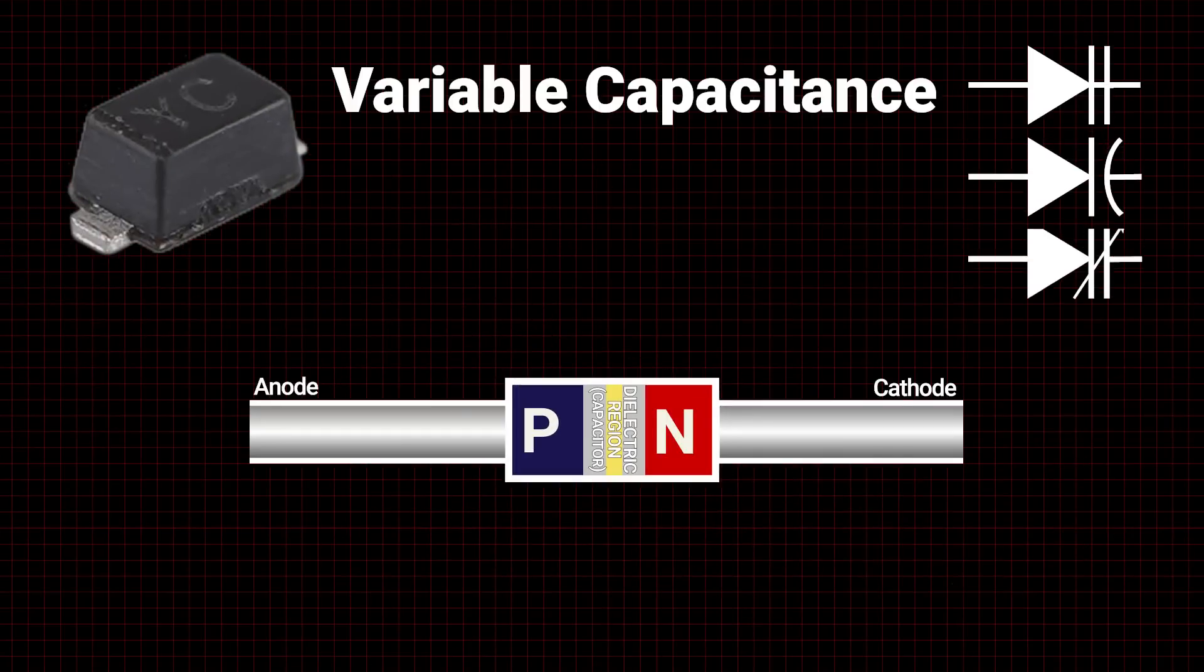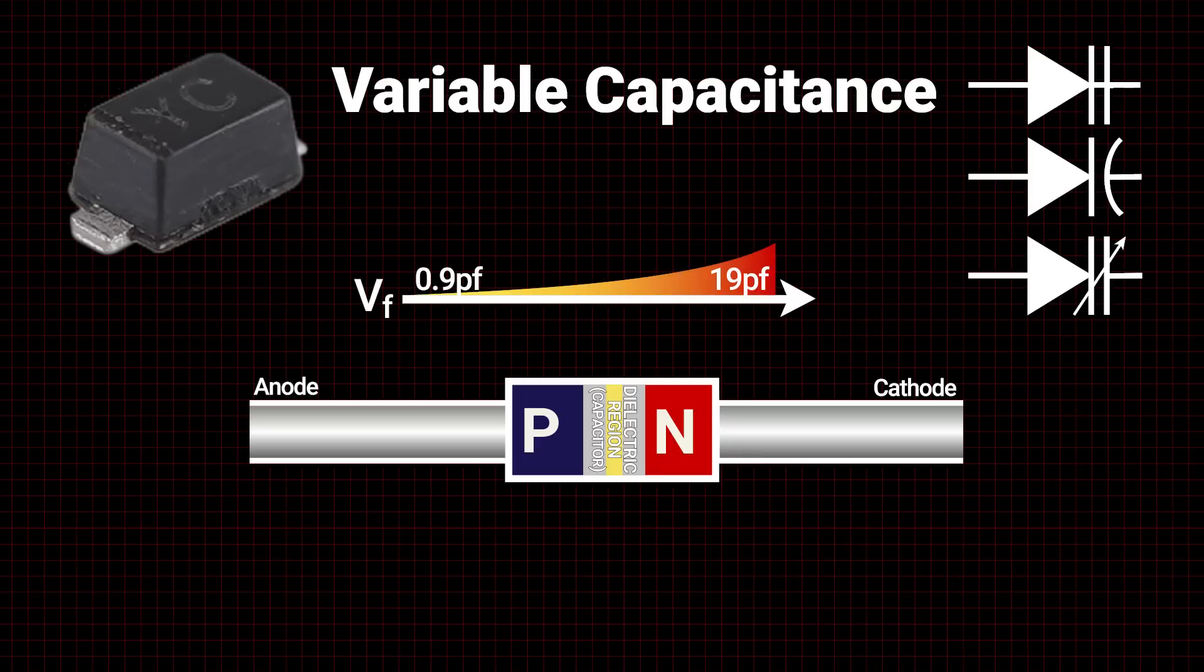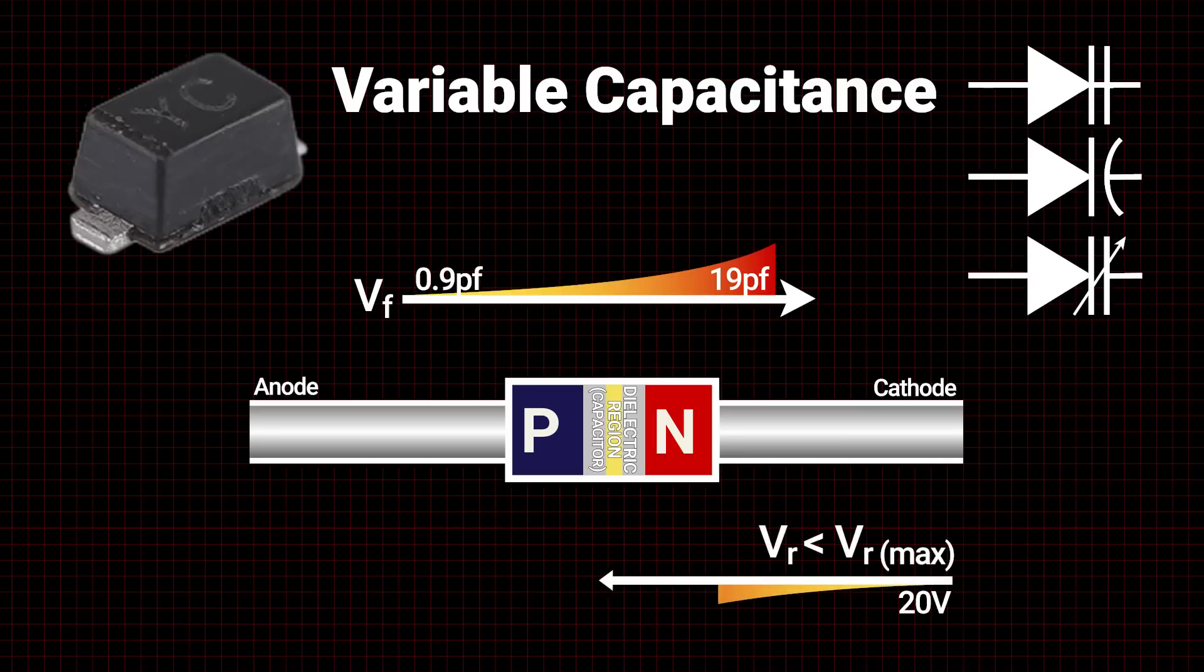Variable capacitance diodes are unique in that they act as variable capacitors, as the name states, rather than as rectifiers. They function in reverse bias and can easily determine the junction capacitance change based on the bias voltage applied to the device.